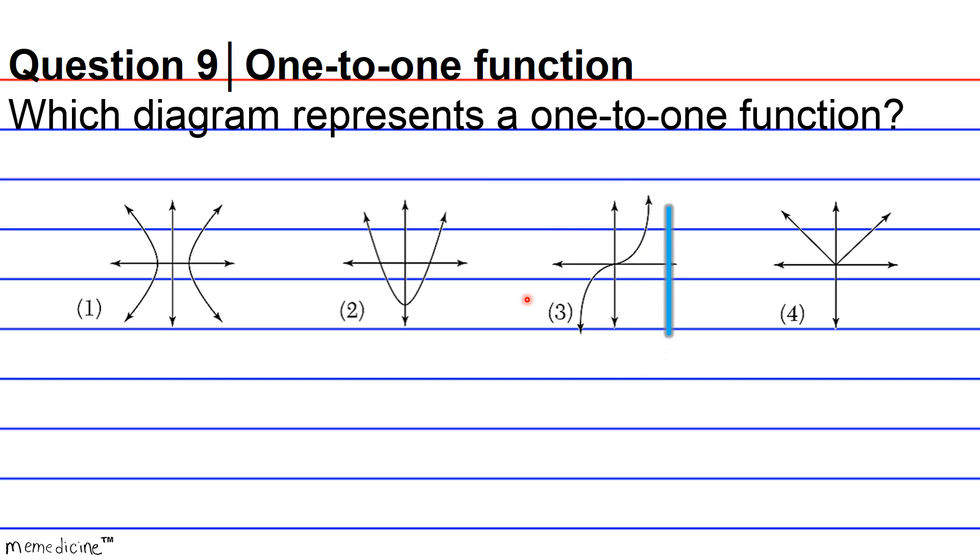It's both a function according to the vertical line test and it's a one-to-one function because it passed the horizontal line test. All right? Okay.